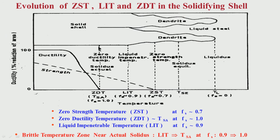The question is at what temperature the solidifying shell develops strength. I have mentioned that at around a solid fraction of 0.7 or 0.75, the strand is developing some strength. When the solid fraction is less than that — from solid fraction 0 to 0.7 or 0.75 — dendrites have formed but liquid steel is also present in substantial amounts, so the strand does not have strength. Strength is developing only at a temperature we call the zero strength temperature, which corresponds to a solid fraction of 0.7.